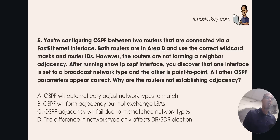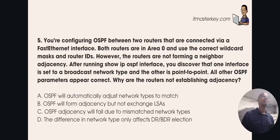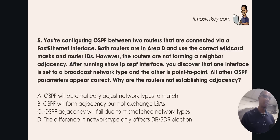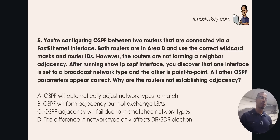You're configuring OSPF between two routers connected via a Fast Ethernet interface. Both routers are in Area 0 and use the correct wildcard masks and router IDs. However, the routers are not forming a neighbor adjacency. After running 'show ip ospf interface,' you discover that one interface is set to a broadcast network type and the other is point-to-point. All other OSPF parameters appear correct. Why are the routers not establishing adjacency?